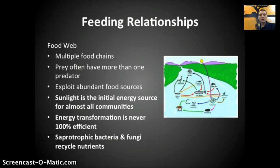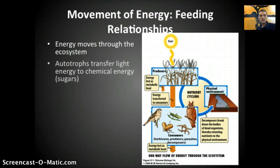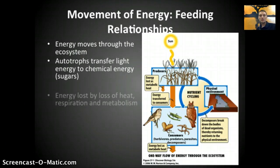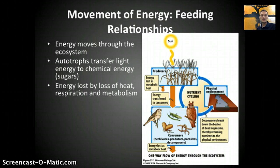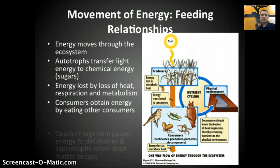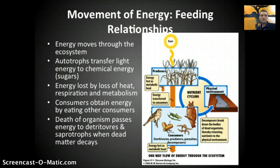A very important part of feeding relationships involves saprotrophic bacteria and fungi, as well as detritivores, which help to recycle nutrients present in the soil or within the ecosystem — phosphate and nitrogen being two good examples. Energy moves through the ecosystem: autotrophs transfer light energy to chemical energy; energy is lost by heat, respiration, metabolism, and waste. Consumers obtain energy by eating other consumers, and the death of an organism passes energy to detritivores and saprotrophs when the dead matter decays — it's a whole connected cycle.